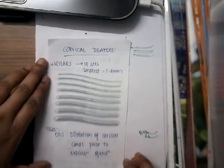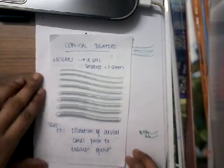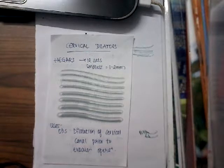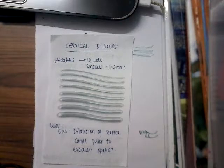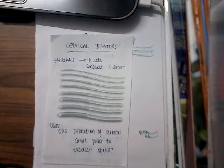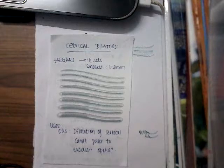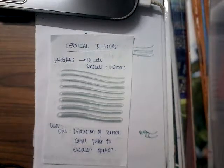Hello friends, welcome to a new lecture today. I would like to discuss about the cervical dilators. The cervical dilators which we use in obstetrics and gynecology are called Hager's dilators. These Hager's dilators are a set of 12 dilators, where the smallest dilator is 1 to 2 millimeters in size.